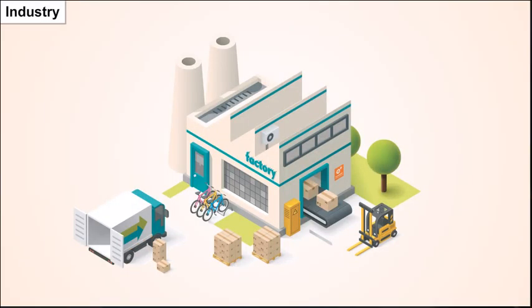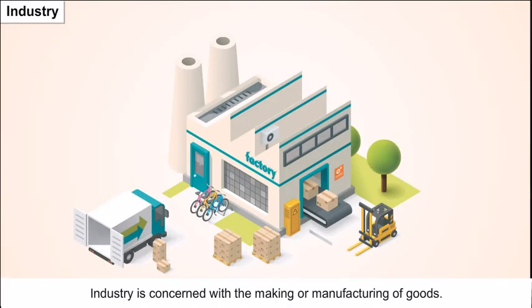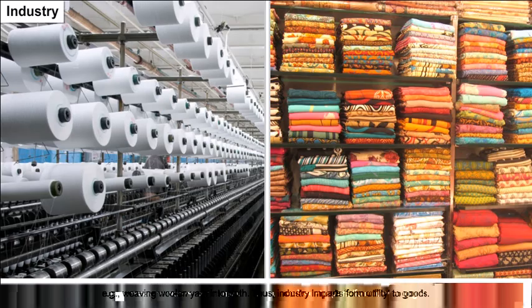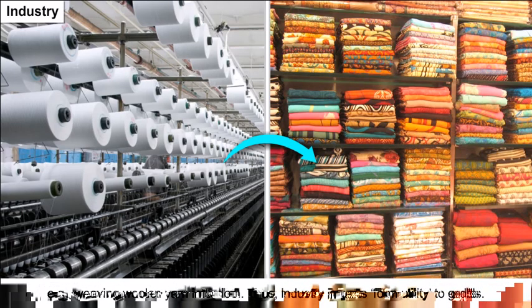Industry is concerned with the making or manufacturing of goods. It is that constituent of production which is involved in changing the form of goods at any stage from raw material to the finished product. For example, weaving woolen yarn into cloth. Thus industry imparts form utility to goods.